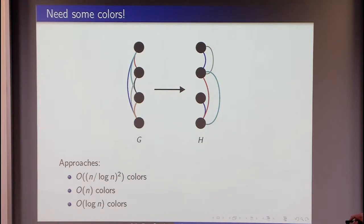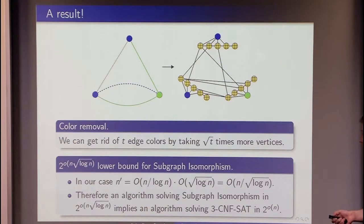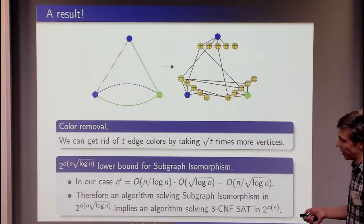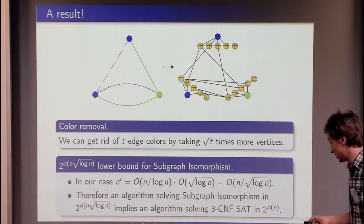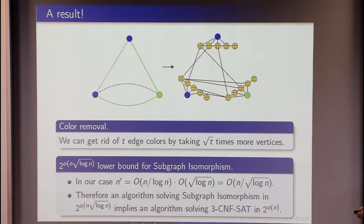This is tightly related to this packing of variables into packs of logarithmic size. But finally, if we have only this number of colors, then we can get back to our original problem by some gadgeting. And if we have only n divided by log n vertices, then we can multiply the number of vertices by square root of the number of colors, square root of log n, and get the number of vertices of a new graph without colors on the edges. We are getting a graph with n divided by square root of log n vertices. And this already gives us a lower bound for subgraph isomorphism. We know from this that subgraph isomorphism cannot be solved in time two to the n times square root of log n under ETH.